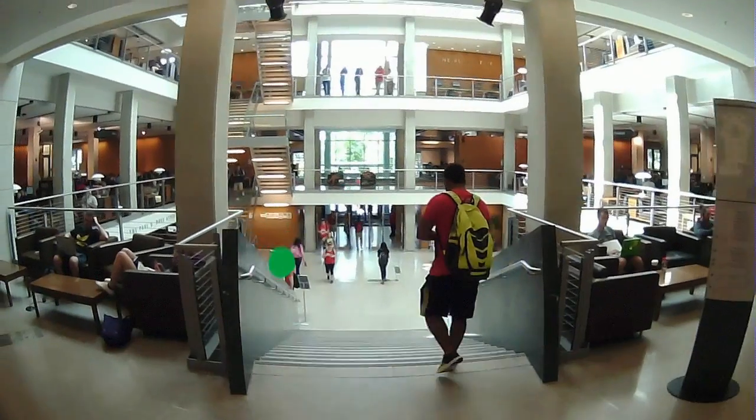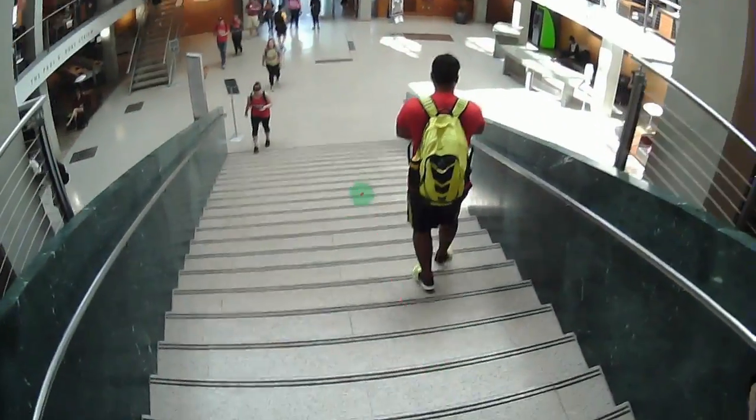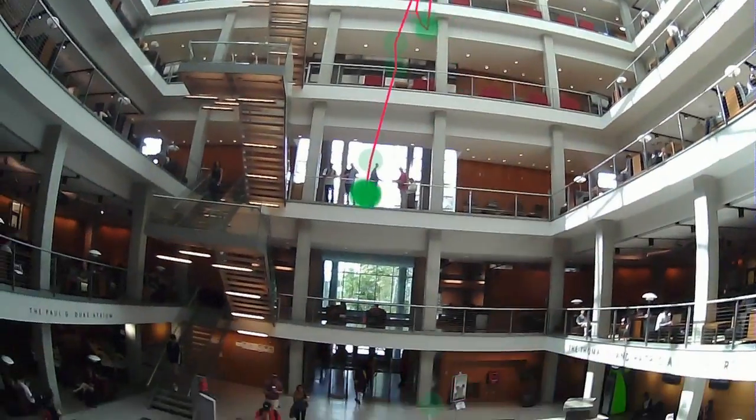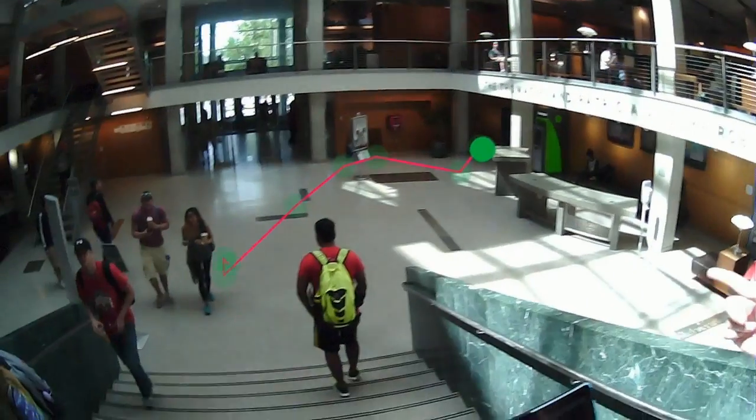So our goal is to develop techniques to track neurocapacity, to track our ability to interact with our world and put numbers on them so that we can actually know what aspects of our cognitive performance are changing through time. And then once we're able to do that, we can take this study from the lab out into the real world and track people's cognitive abilities, track their neurocapacity in real life.